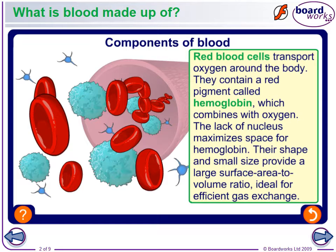White blood cells are the cells of the immune system which help to remove pathogens. They're very flexible. The most common one found throughout the body is called a macrophage — a big cell eater. Phage means cell destroyer. What they do is engulf the bacteria or whatever the pathogen is and destroy it.